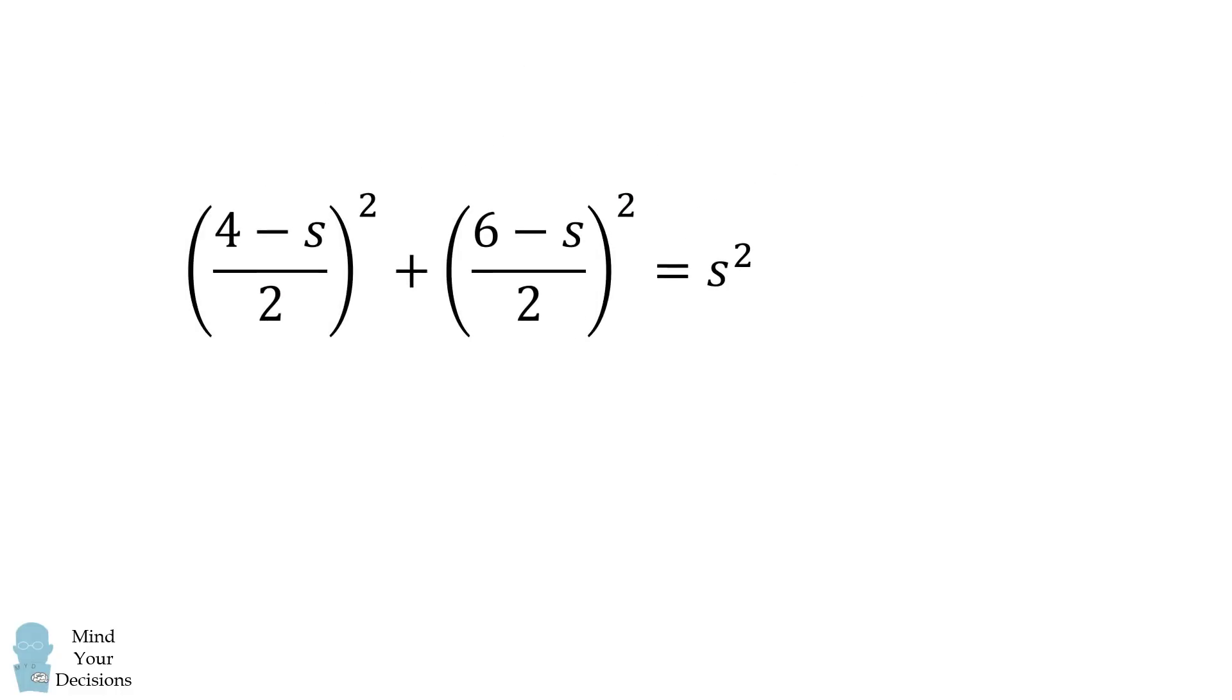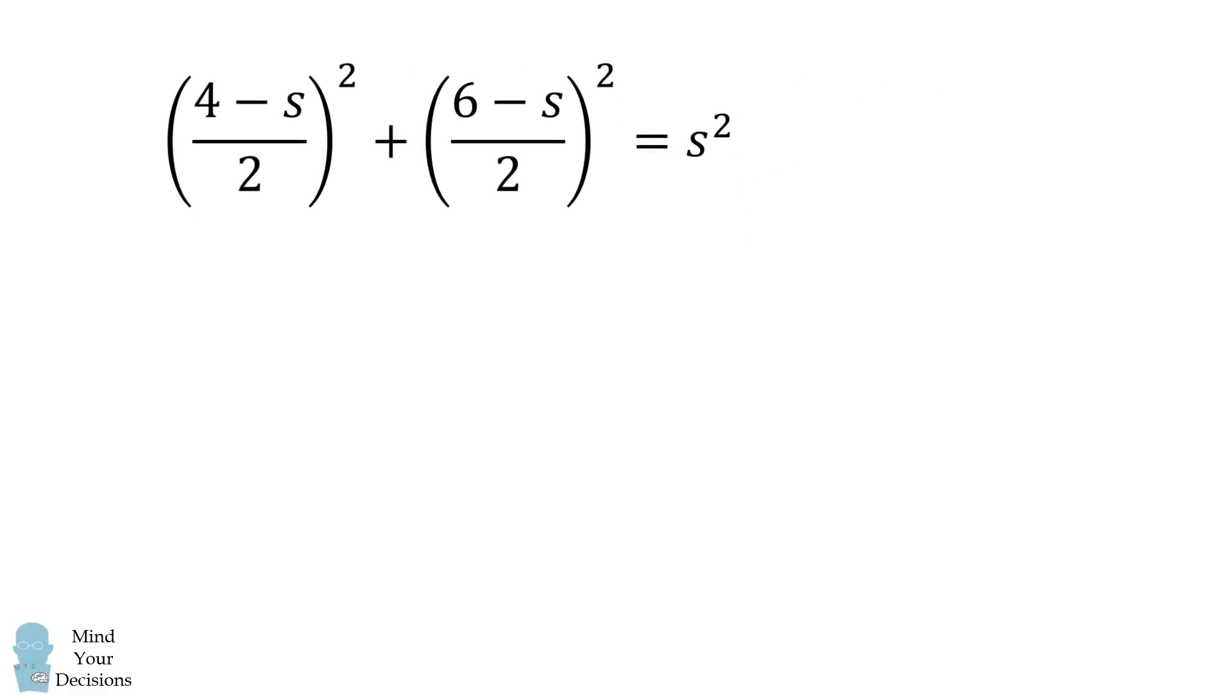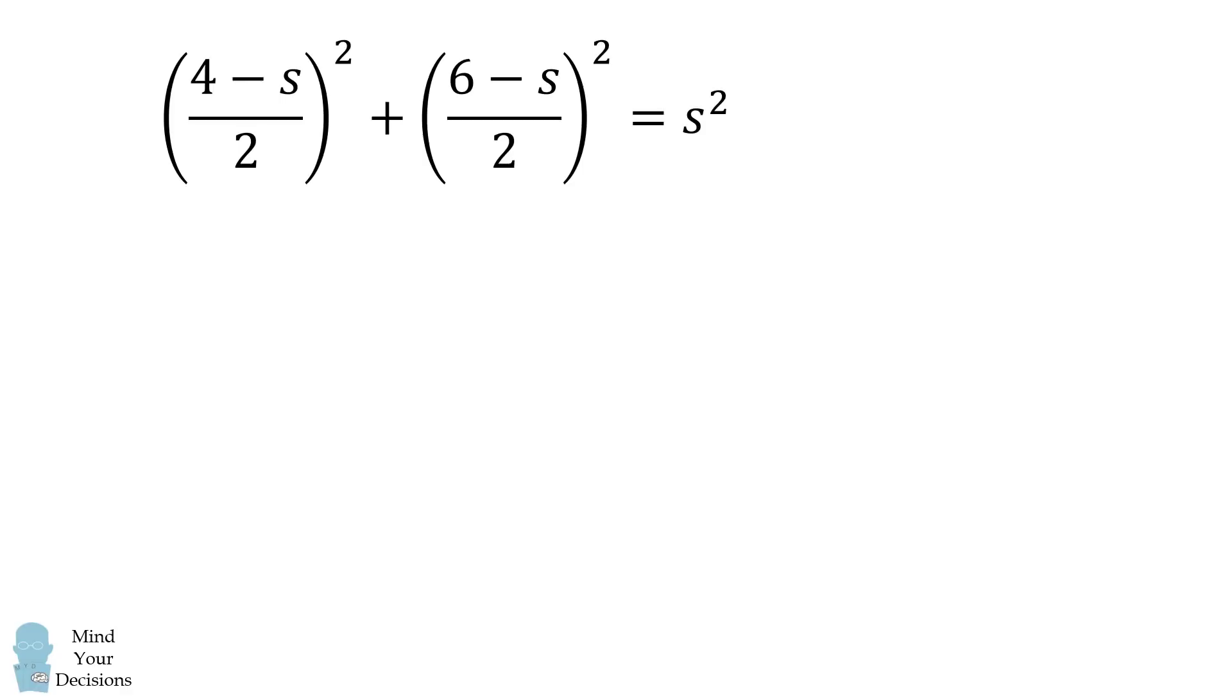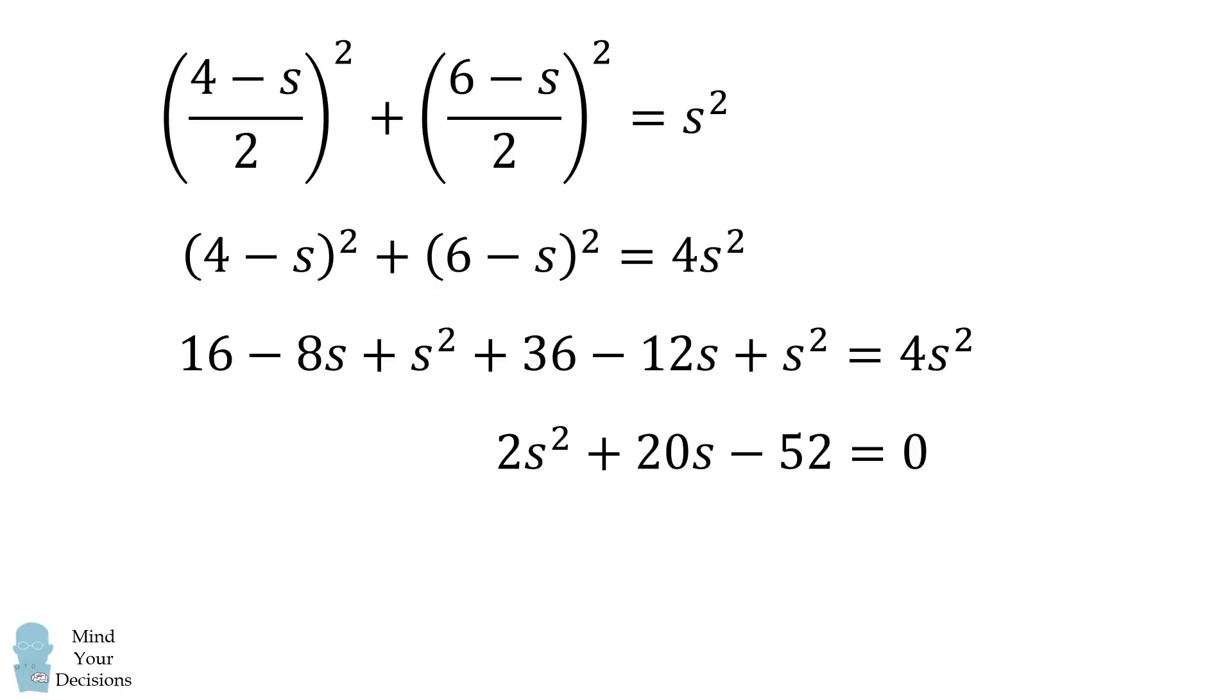The result will be a quadratic equation in the variable S. We'll solve this systematically. We'll first multiply both sides by 4, then we'll expand each binomial, and collect like terms. We'll divide this equation by 2, and then we'll use the quadratic formula to get two values for S.